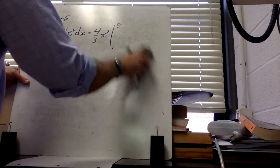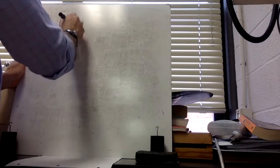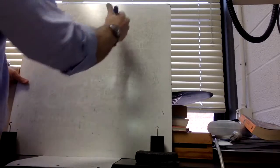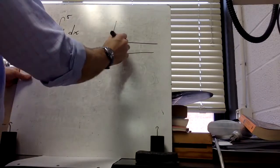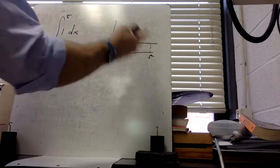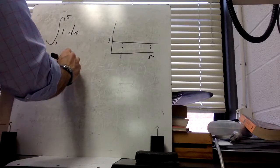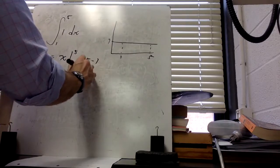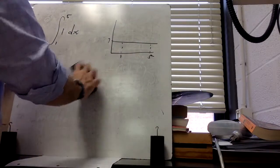What if the function equals 1? The integral of 1 dx from 1 to 5: the function is just a horizontal line at height 1. The anti-derivative of 1 is x, so evaluating x from 1 to 5 gives 5 − 1 = 4 — exactly what we'd expect geometrically. What if it's 3 instead, from 1 to 6? The anti-derivative of 3 is 3x, so we get 3(6) − 3(1) = 15.